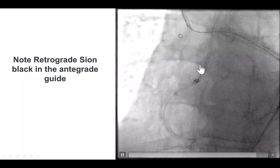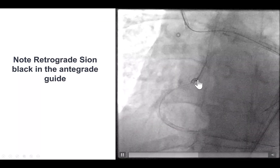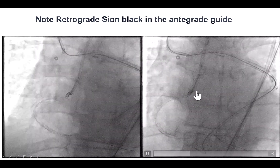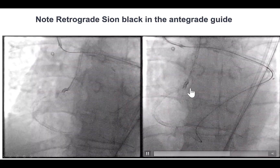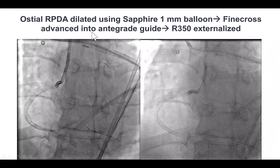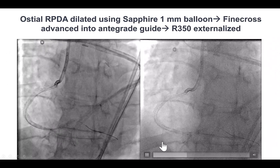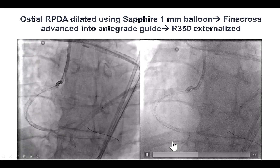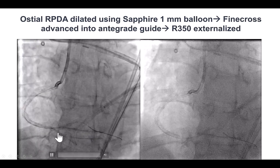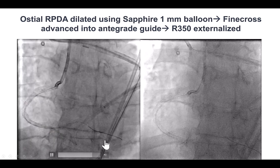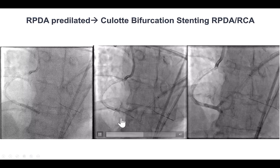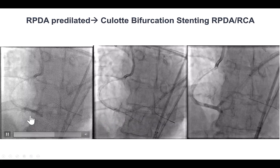Eventually, we brought the Sion Blanca into the antegrade guide catheter. We were then able to advance the retrograde microcatheter and externalize an R350 guide wire. Now we had access through both vessels — an externalized wire through the PDA and an antegrade wire into the right posterolateral — and we ended up performing a culotte technique.